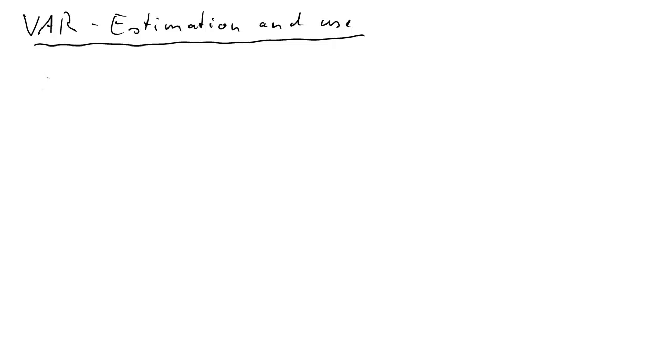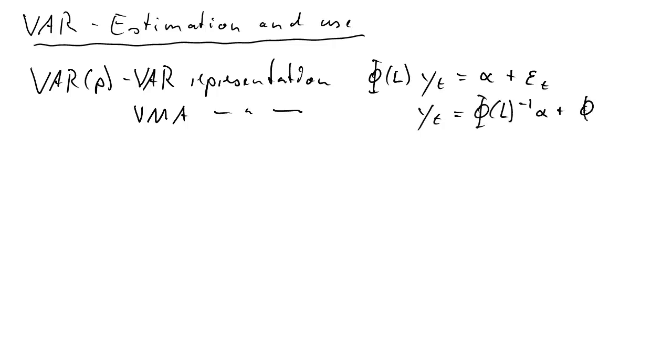Here we will talk about estimating and using vector autoregressive models. Let's first state a VAR(p) model. Now p is generic, so we're using the lag polynomial here, phi(L), big phi(L). We also know we can represent the same model as a vector moving average model, achieved by pre-multiplying both sides with the inverse of that lag polynomial. Depending on what we want to do, we use different representations. When talking about estimation, we use the vector autoregressive representation.